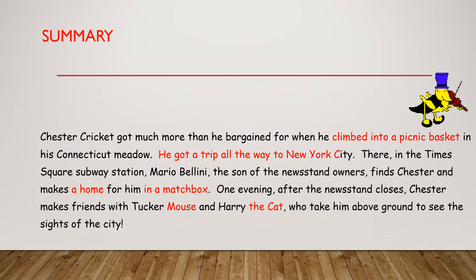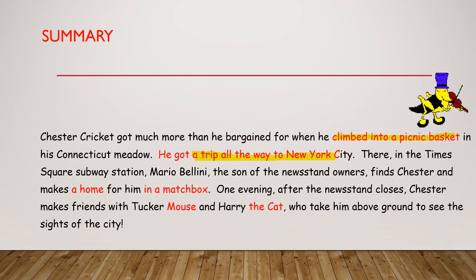One evening after the newsstand closes, Chester makes friends with Tucker Mouse and Harry the Cat, who take him above ground to see the sights of the city. Now, how can I identify fantasy in a text? First of all, Chester climbed into a picnic basket and took a trip all the way to New York. This is something that never happens in real life — you take a plane, car, or train, but using a picnic basket to travel to New York City is unreal.